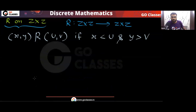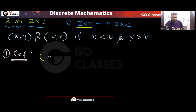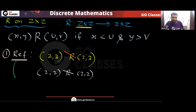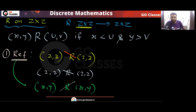Now let's check whether this relation is reflexive. For reflexive, we need (X, Y) related to (X, Y), meaning X < X and Y > Y. Take (2, 3): is it related to (2, 3)? No, because 2 is not less than 2. So this relation is not reflexive.